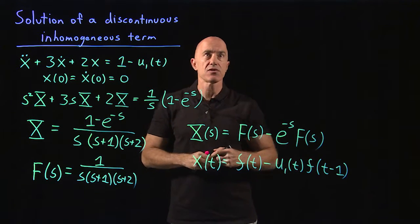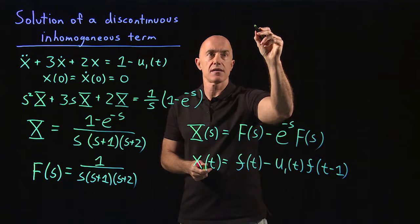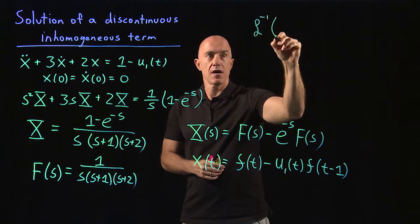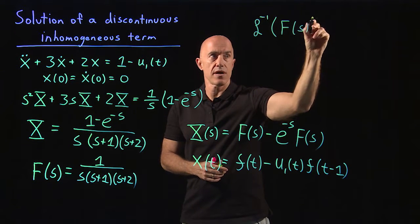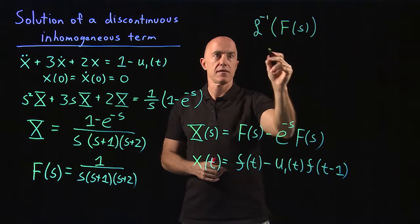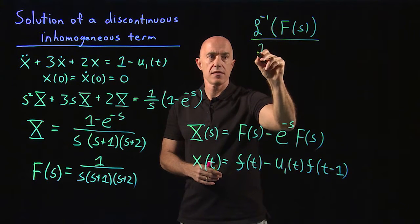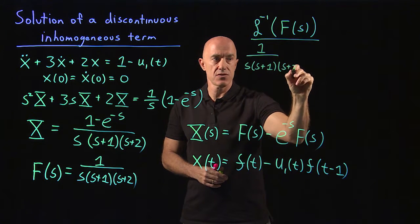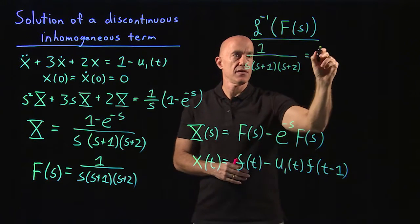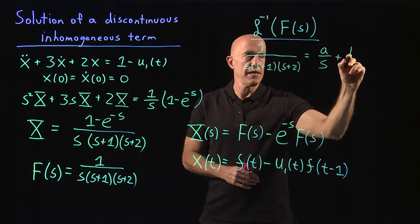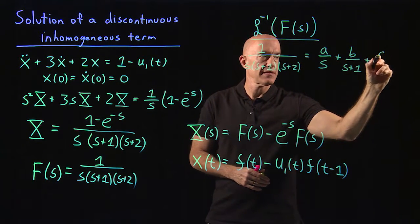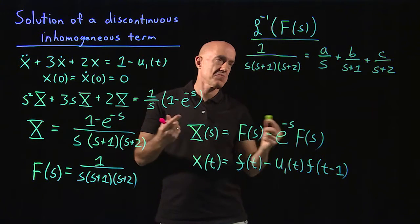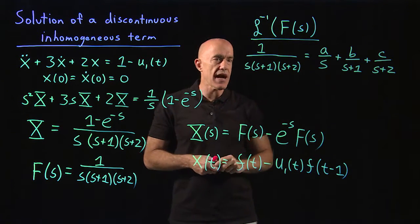The only remaining step is to take the inverse Laplace transform of capital F of s. To do that, we write the inverse Laplace transform of 1 over s times s plus 1 times s plus 2, and perform a partial fraction expansion: a over s plus b over s plus 1 plus c over s plus 2.